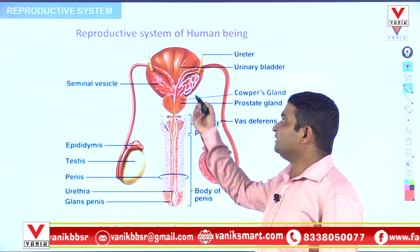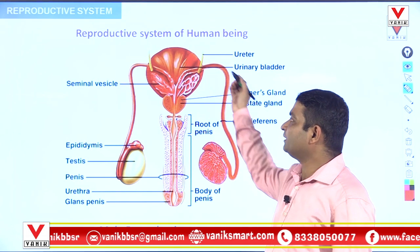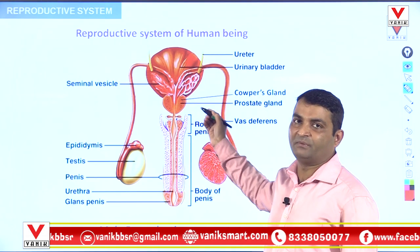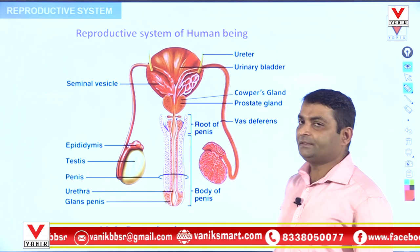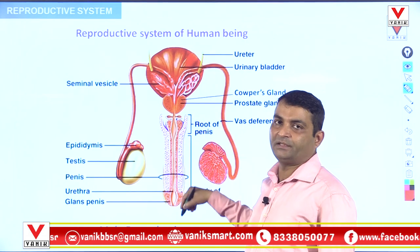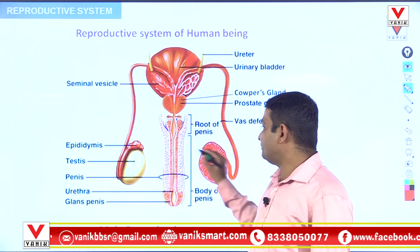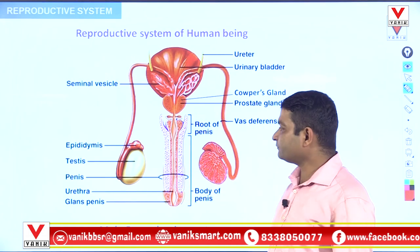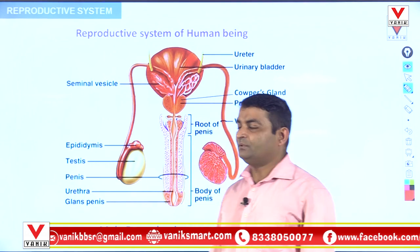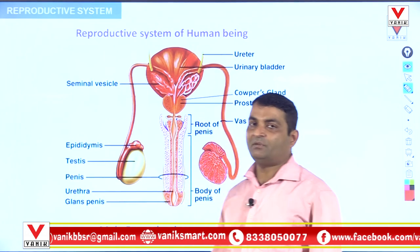Now let's come to the point — the male reproductive system. This is the diagram of the male reproductive system of human beings. It contains one penis, that is called the copulatory organ, and one pair of testes. We will discuss what is the function of the testis and what is the function of the penis.